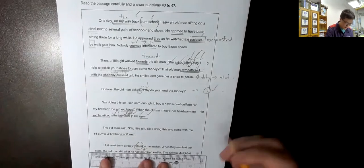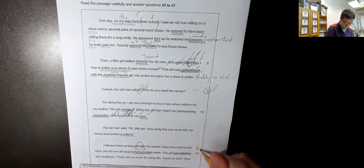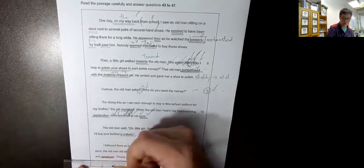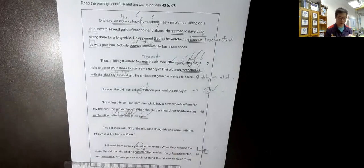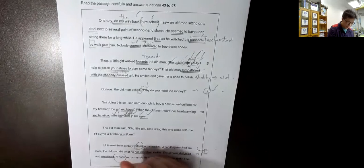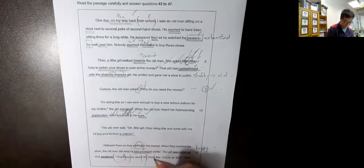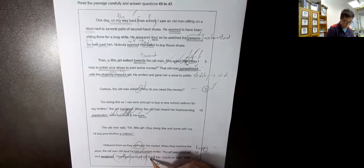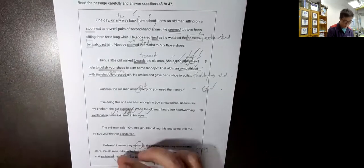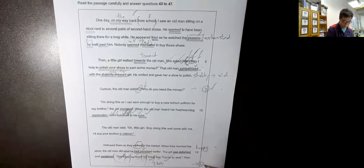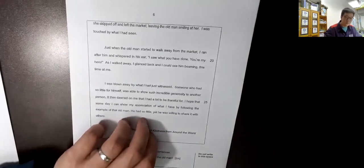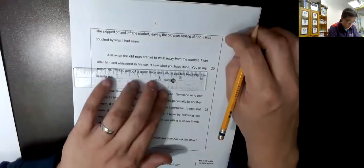And the girl was delighted. Delighted 就是開心. And exclaimed, 感嘆就是好重表情, exclamation mark的exclaim是靈止這個字. Thank you so much for doing this. You're so kind. Then she skipped off and left the market, leaving the old man smiling at her.